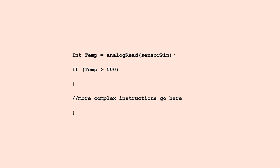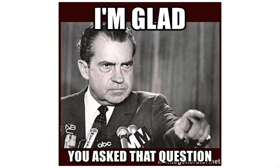So, how does a complex statement like this one actually run on a microcontroller that only knows basic arithmetic, logic, moving, and shifting? How do these statements translate into the ones and zeros that the microcontroller can actually understand? Glad you asked — this is what we're going to answer now.